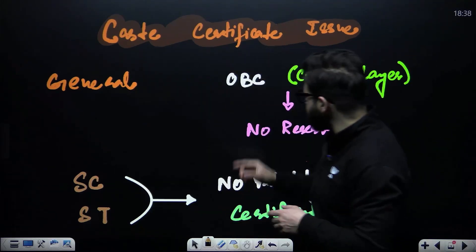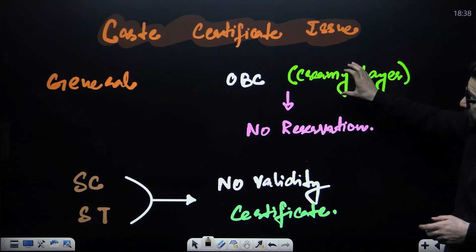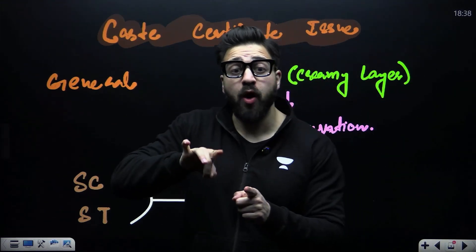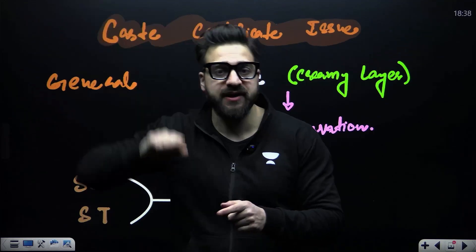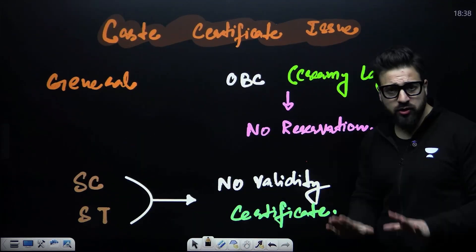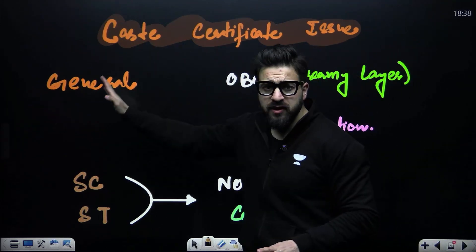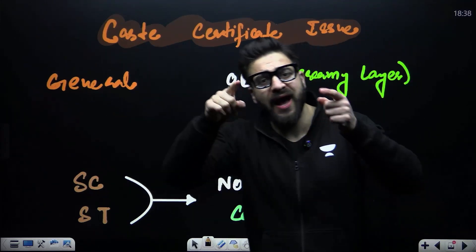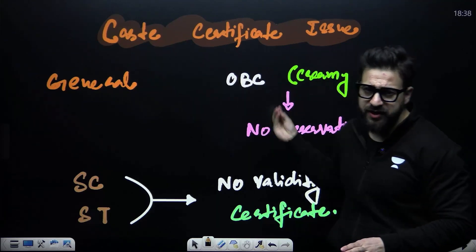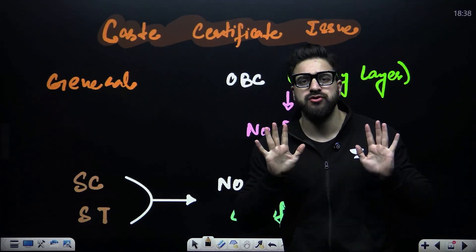The first category is General or OBC Creamy Layer. This is the category with an income of more than 8 lakhs per year. They do not have any reservation. For these students, no CAST certificate is required. Just fill up the registration form like you used to and you are good to go.